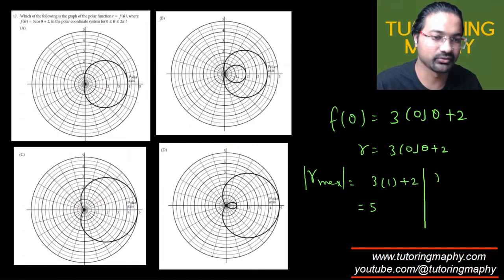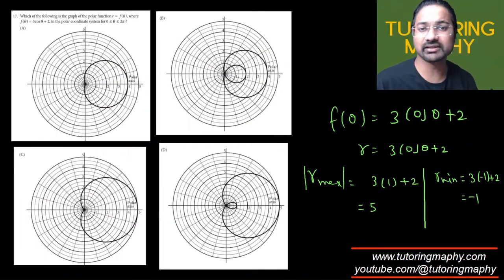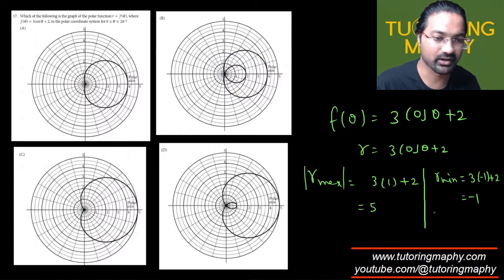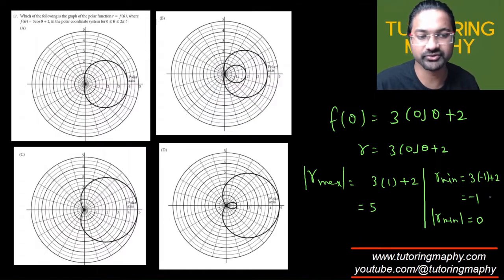The minimum value of r will be when cos is -1, so this will be 3(-1) + 2 which is -1. But since I'm looking for the minimum value of absolute value of r, obviously the minimum value of |r| will just be 0 because it cannot be negative.